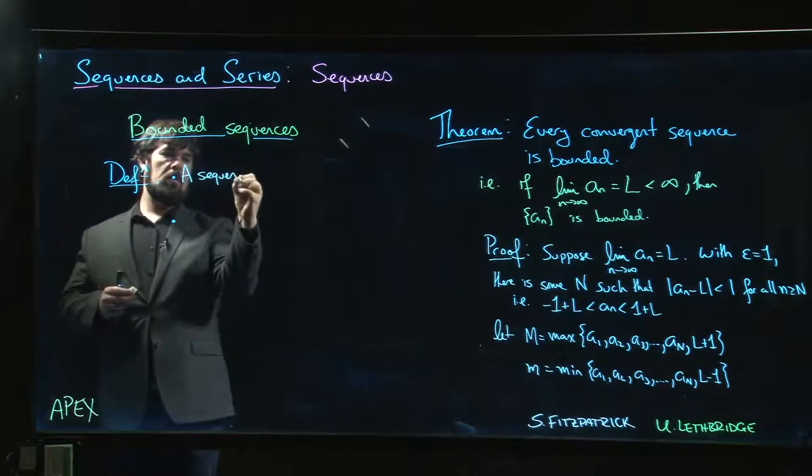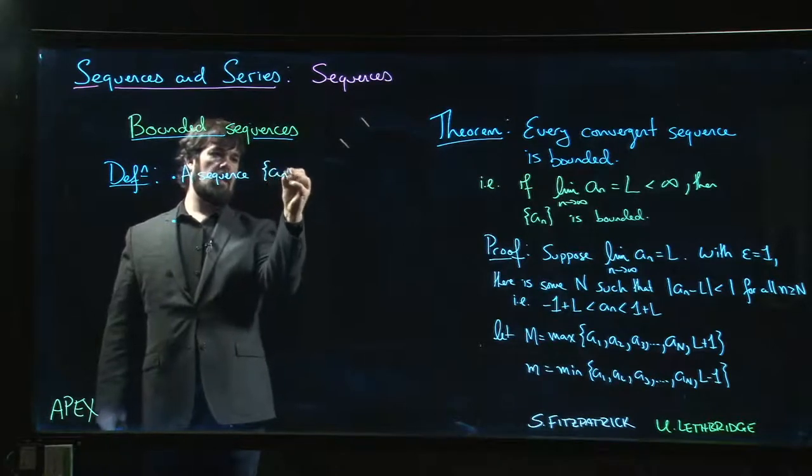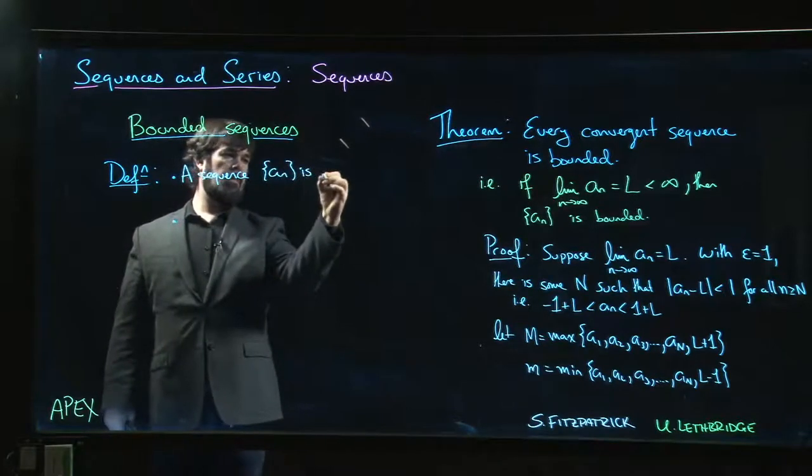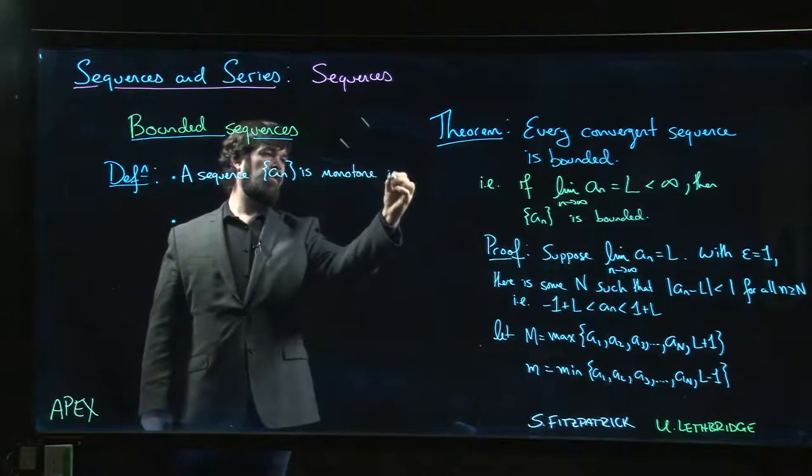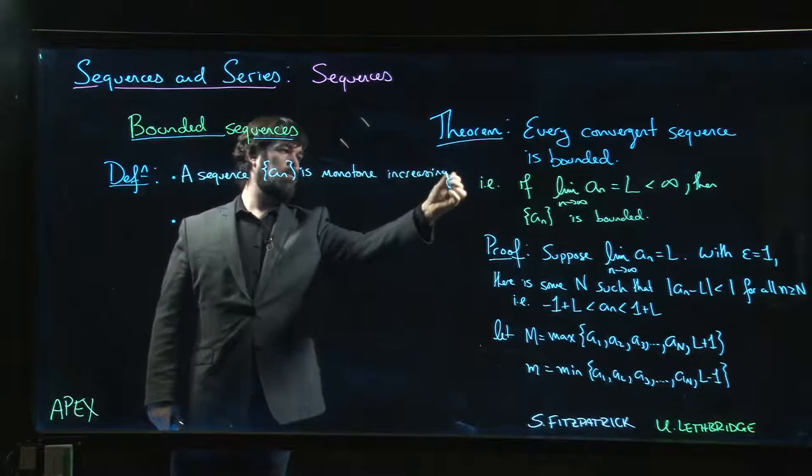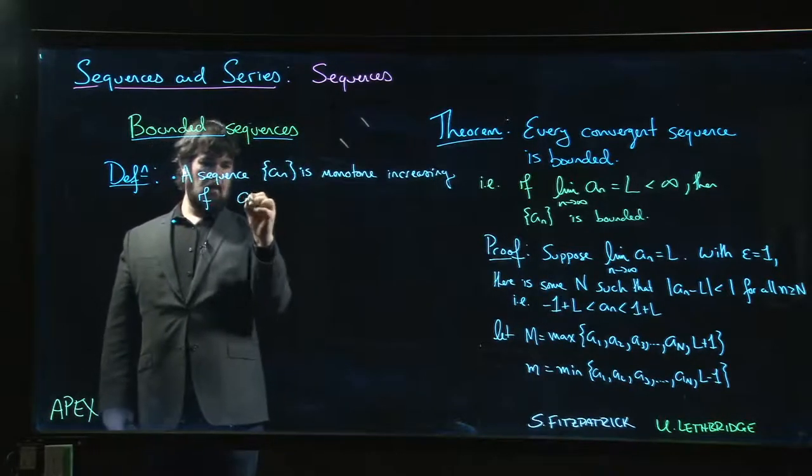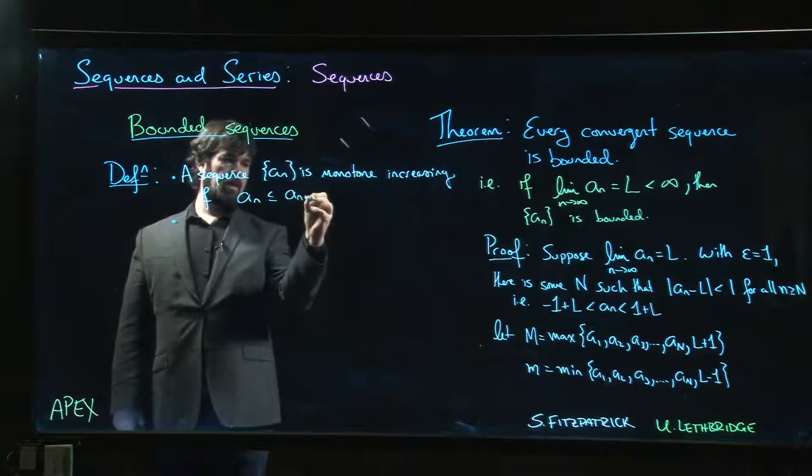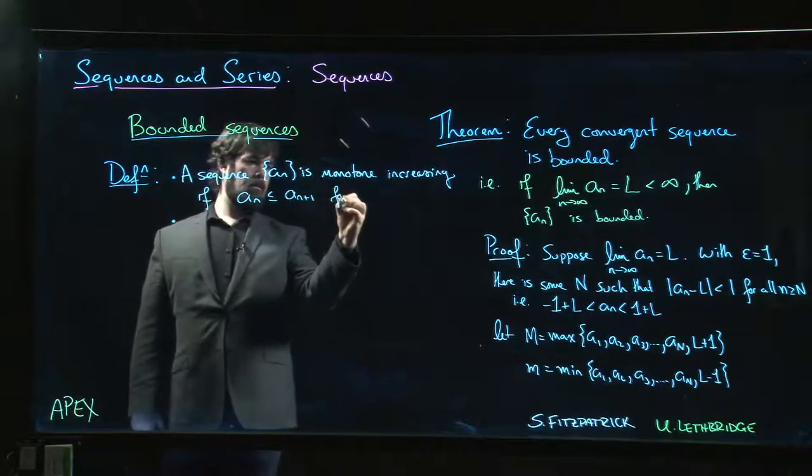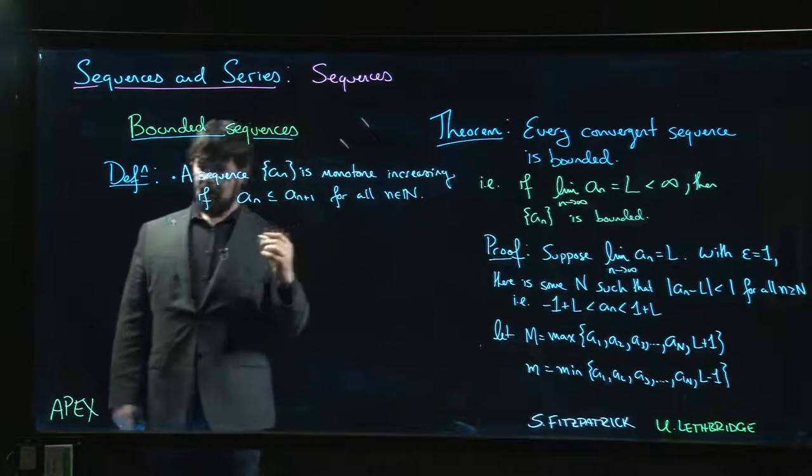A sequence a_n is monotone increasing if a_n is less than or equal to a_(n+1) for all natural numbers n.